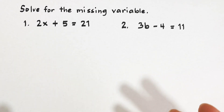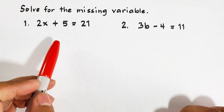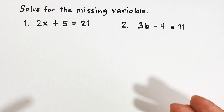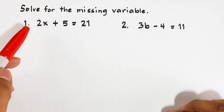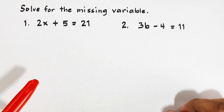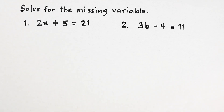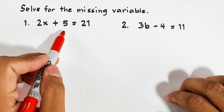Basically, the steps to solve two-step equations are: first, either add or subtract to eliminate the constant; second, multiply or divide to eliminate the coefficient with the variable. So let's start with number one — we are asked to solve 2x plus 5 is equal to 21.